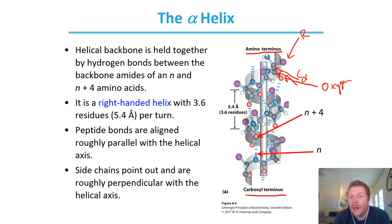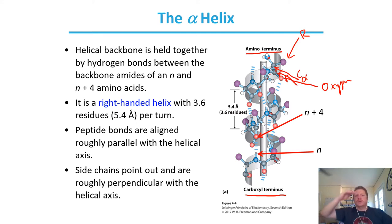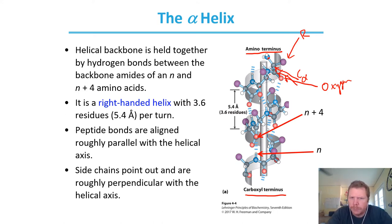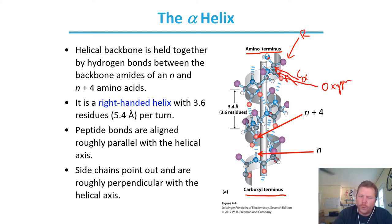The height of that turn — also known as the pitch — is going to be 5.4 angstroms. So from one point to the next point to make a full rotation, it's 3.6 amino acids and it's 5.4 angstroms tall. Your peptide bonds are aligned roughly parallel to the helical axis, and side chains point out. That's one important point about the alpha helix.